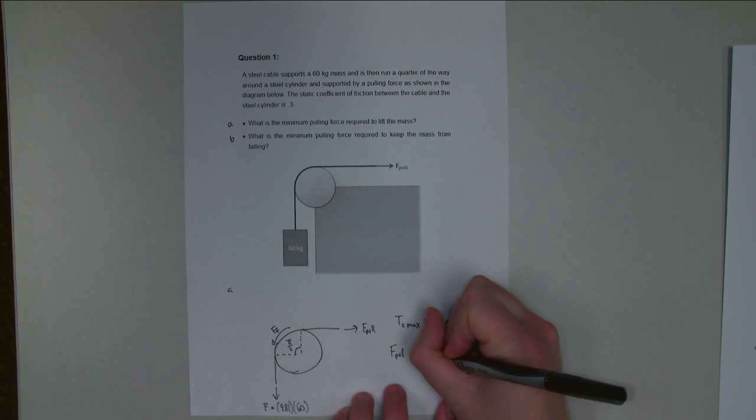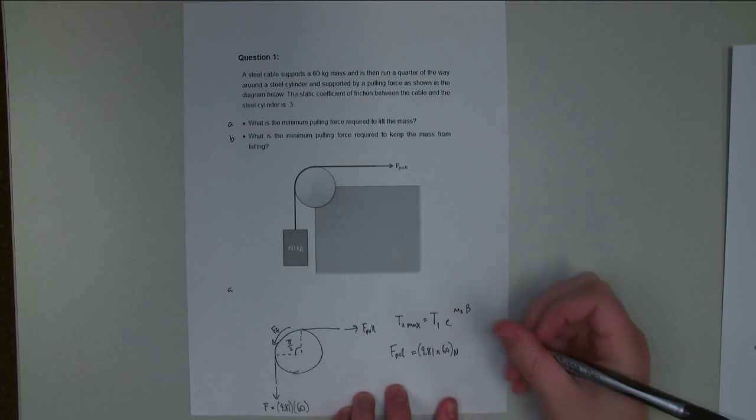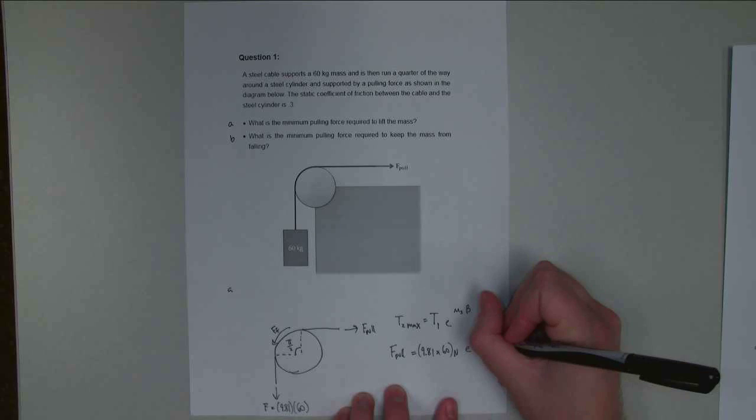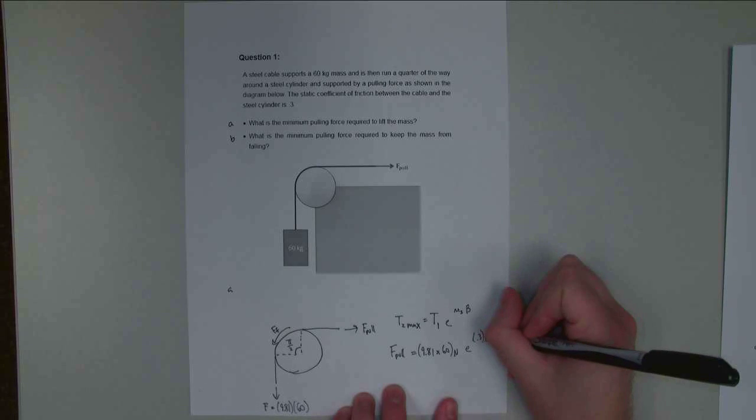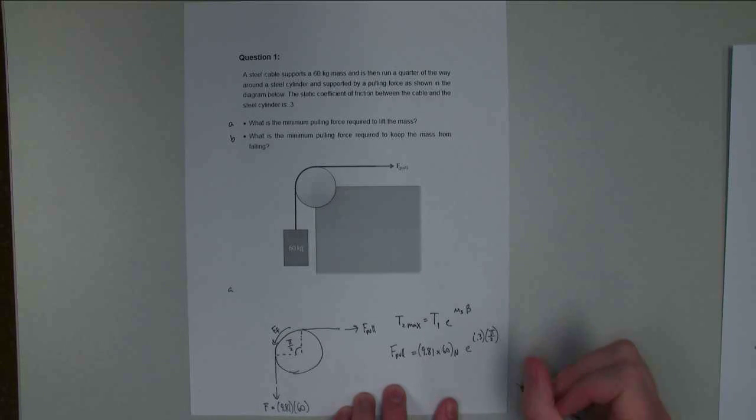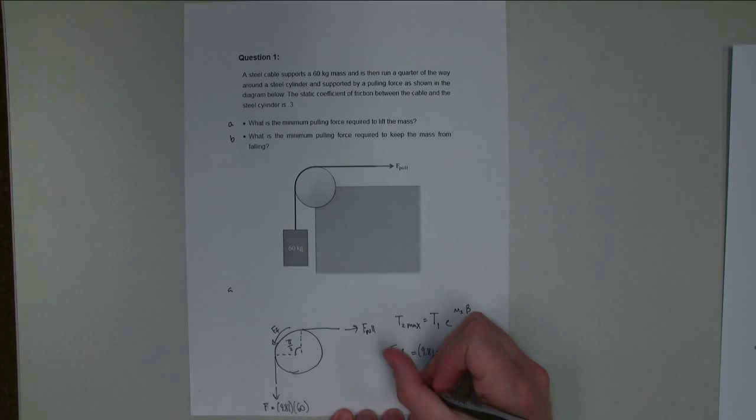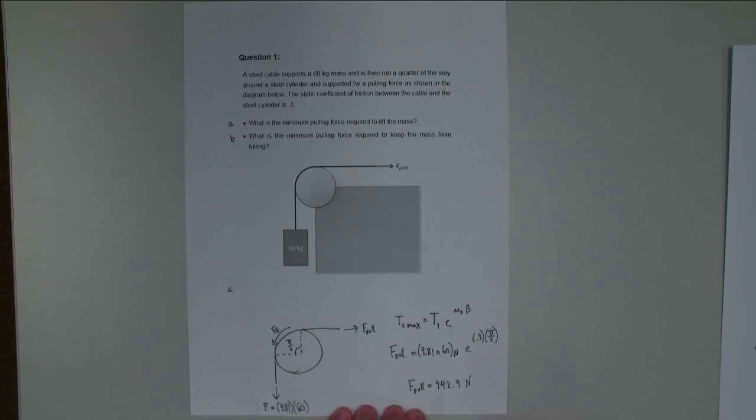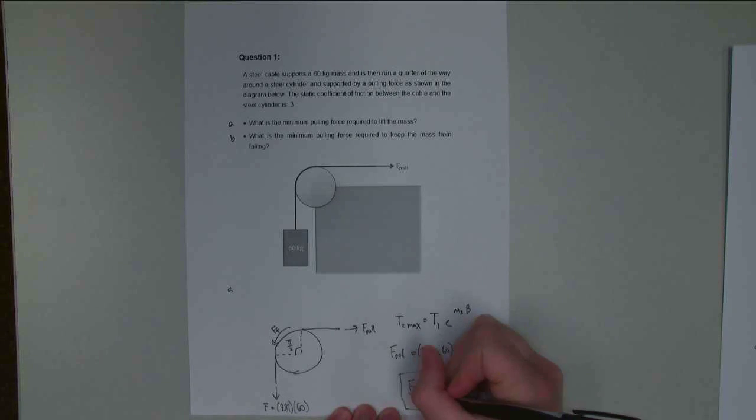So, 9.81 times 60, and that weight will be in newtons. We multiply that by E to the static coefficient of friction, which is 0.3, times beta, which is our contact angle of pi over 2. We've got all of the numbers. We simply plug it all into our calculator, and we find that F pull is equal to 942.9 newtons. And that is going to be to lift the whole thing. This is for part A.